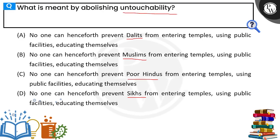But untouchability was specifically practiced with Dalits, because they were considered below the rest of society. So they didn't go to temples or use public facilities. Because of this, the concept of untouchability was abolished by the Indian Constitution.